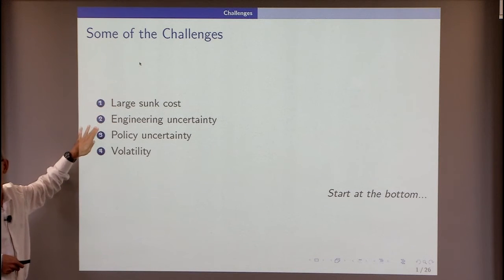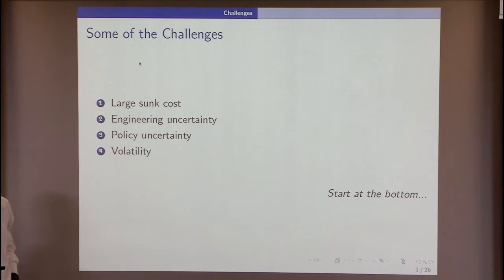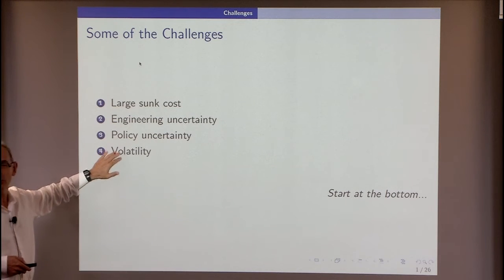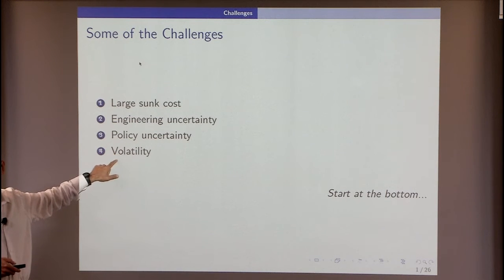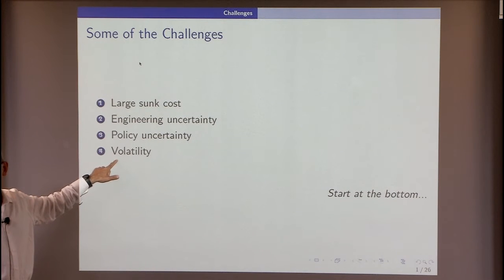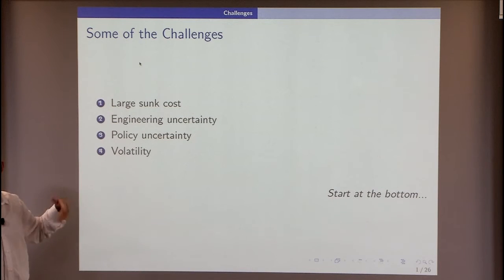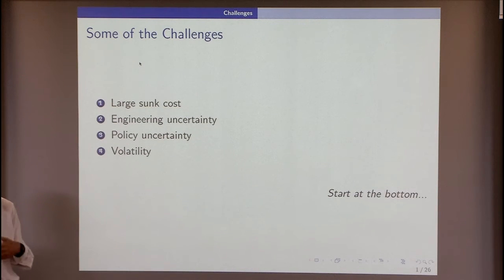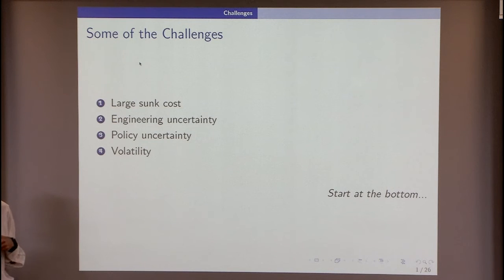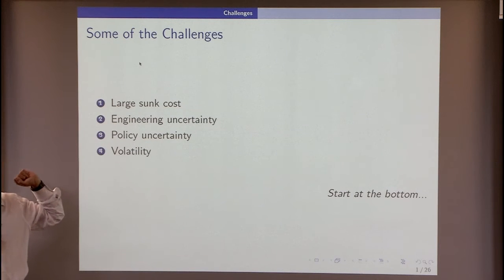All three issues — sunk cost, policy uncertainty, and volatility — are huge and equally important. But volatility is the one we could knock out, just like when the internet appeared and everyone thought it was an impossible control problem. Within five years the collective engineering community solved it through incredible ingenuity. We could just knock this out if we were given the chance.